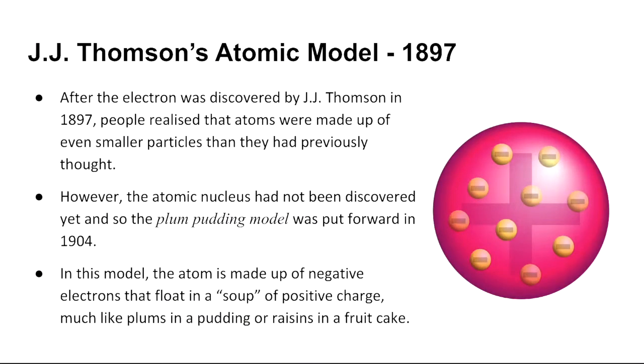Scientists by the name of J.J. Thompson devised his interpretation of Dalton's billiard ball model. After the electron was discovered by J.J. Thompson in 1897, people realized that atoms were made up of even smaller particles than they had previously thought. However, the atomic nucleus had not been discovered yet, so we had no idea what it was. And so he eventually put together what is referred to as this plum pudding model, or some others might refer to it as raisins in a fruitcake or chocolate chips in a muffin. The idea that we had this entire atom, and pretty much electrons would float in this soup of a positively charged atom.